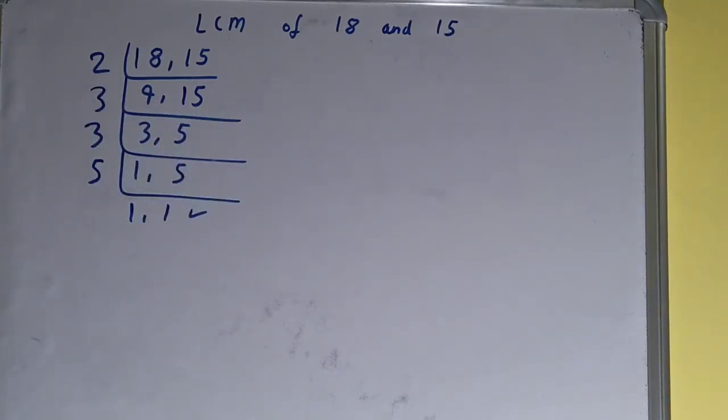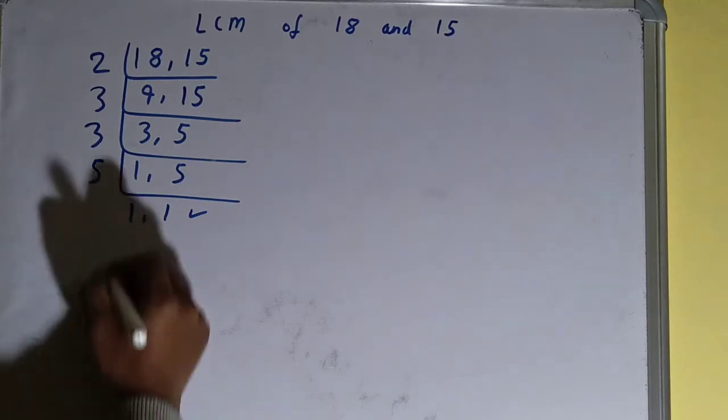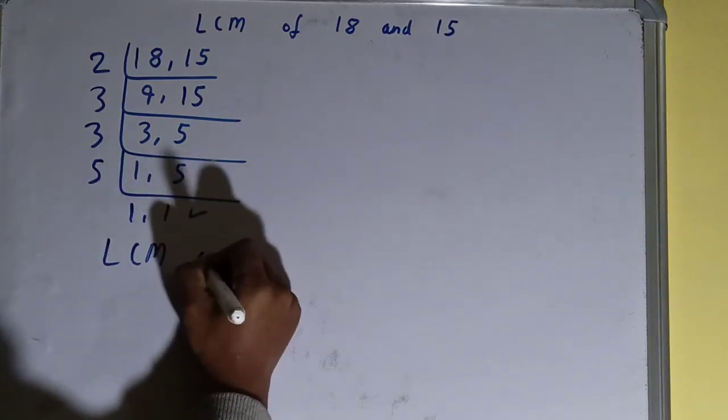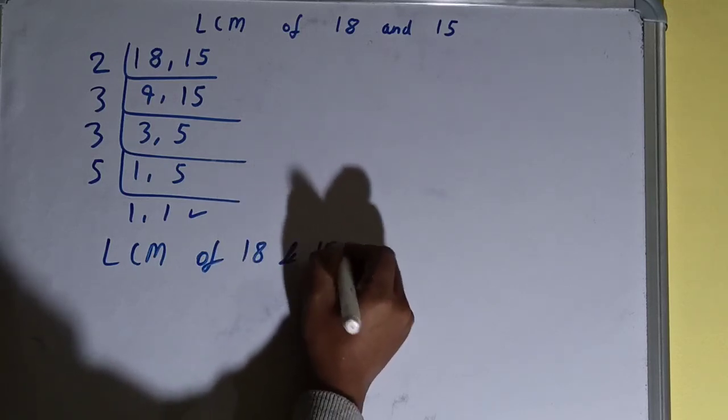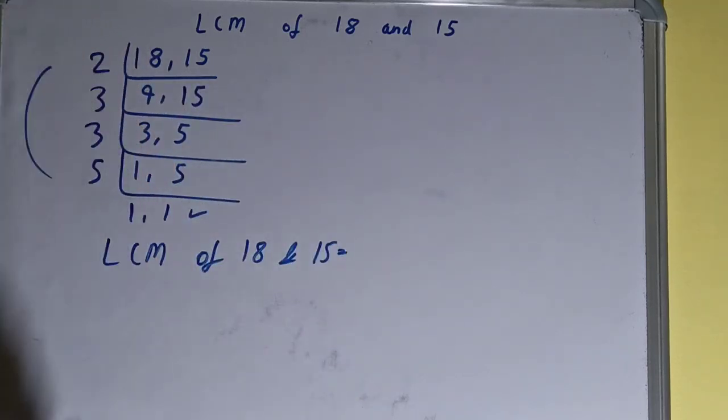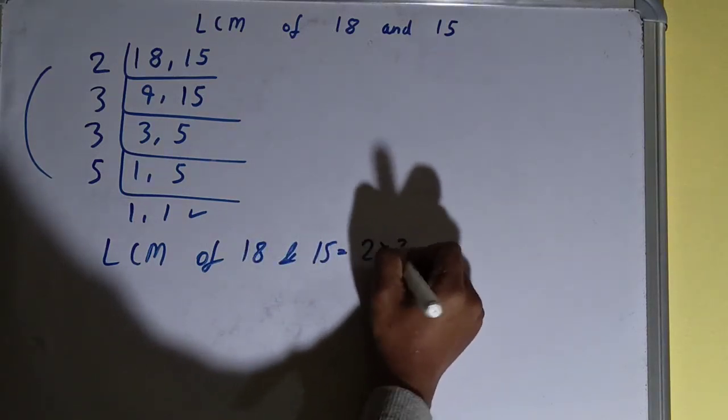Once we have that, we need to stop and we need to do one last thing. That is: LCM of 18 and 15 is equal to multiply whatever you have got on the left-hand side. That is 2 cross 3 cross 3 cross 5, so the answer will be...